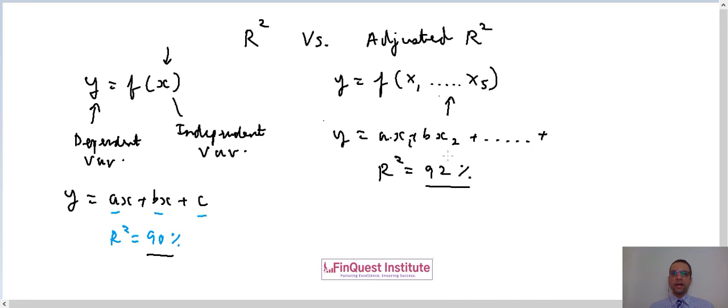But adjusted R squared takes care of that. By using adjusted R squared, we ensure that we are only taking the impact of those variables which are adding to the explanatory power of my model.